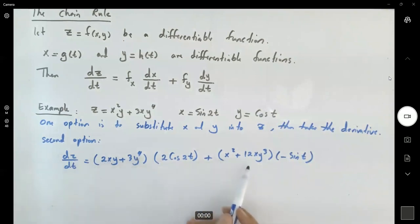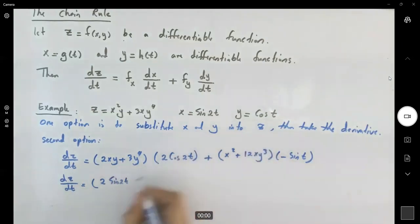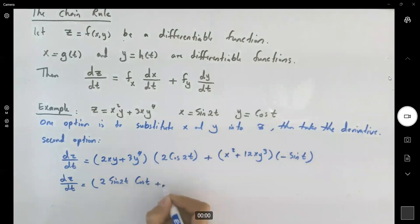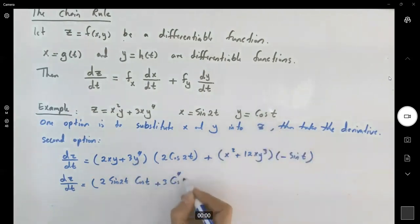We need to substitute x and y and write everything in terms of t. So dz/dt equals 2x, which is 2sin(2t), times y, which is cos(t), plus 3y⁴, cos⁴(t), times 2cos(2t).